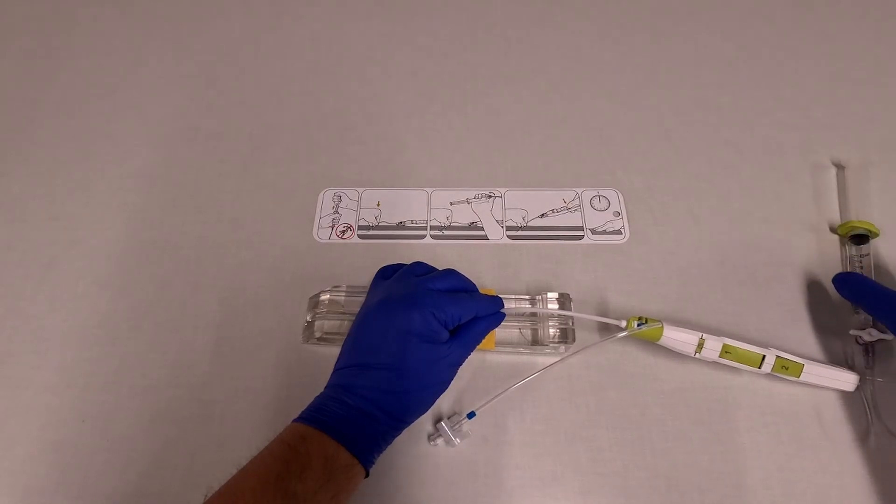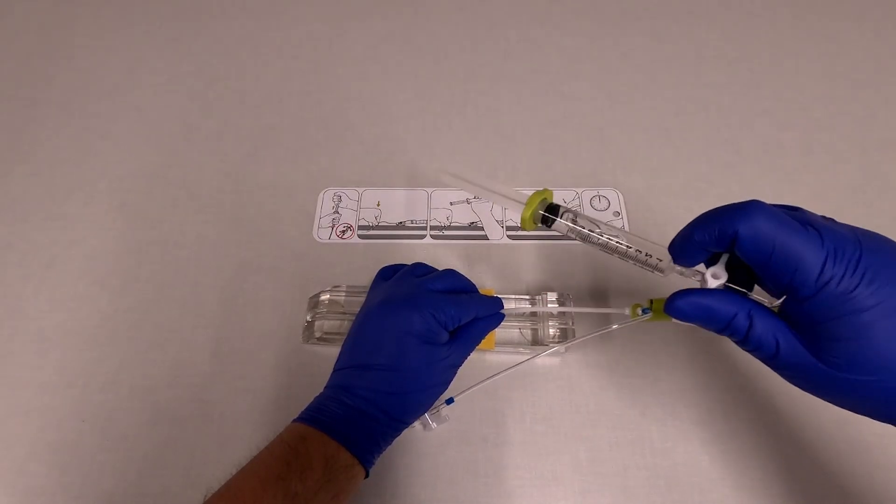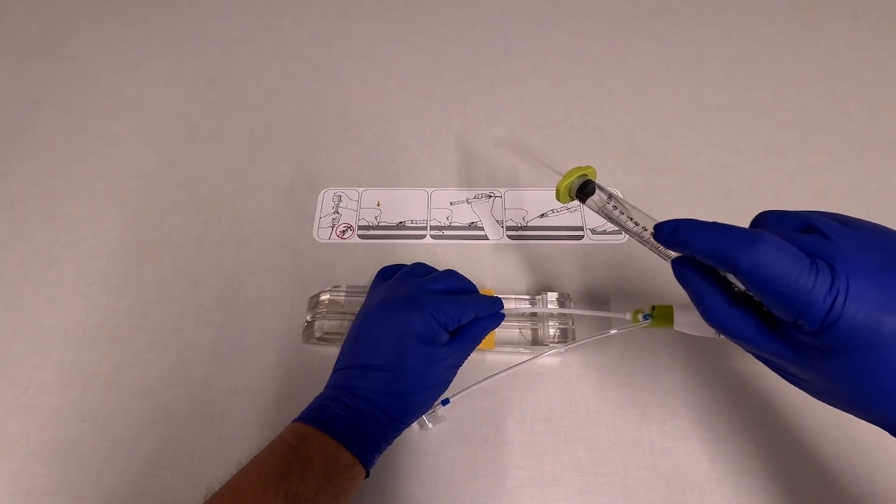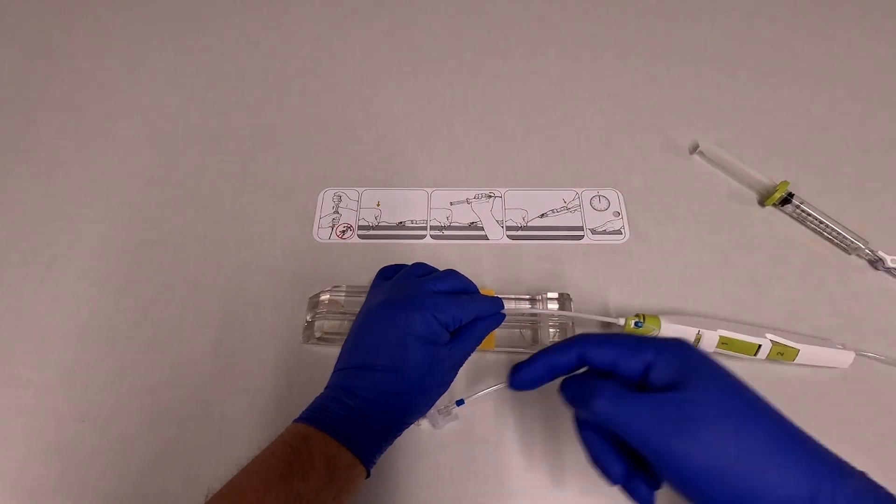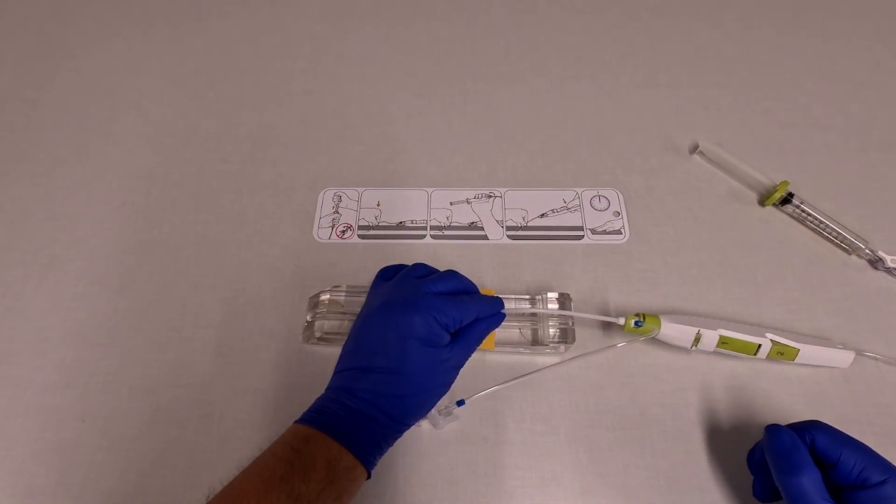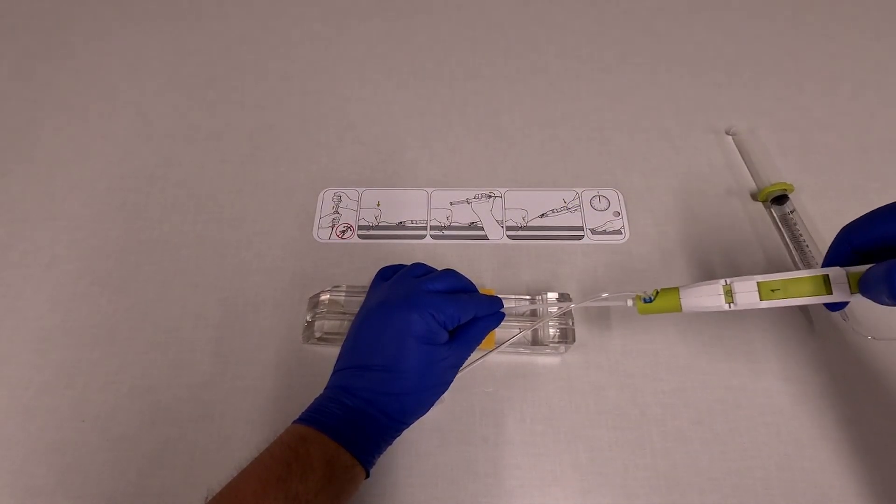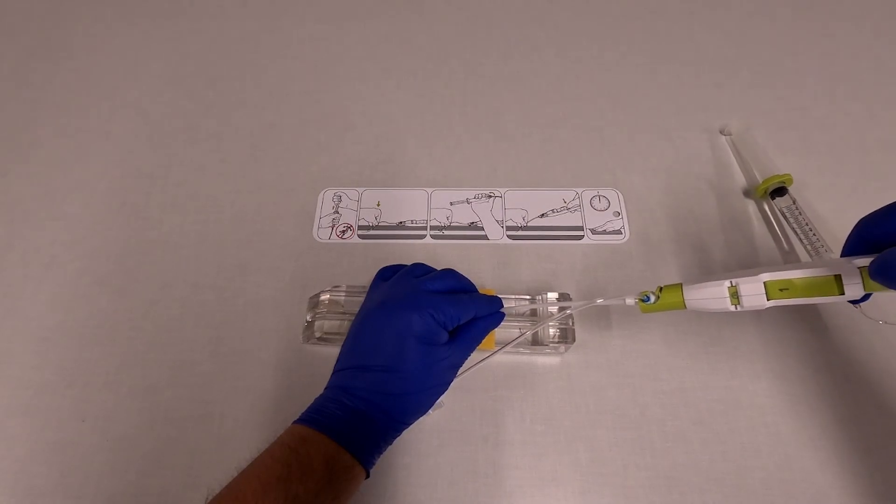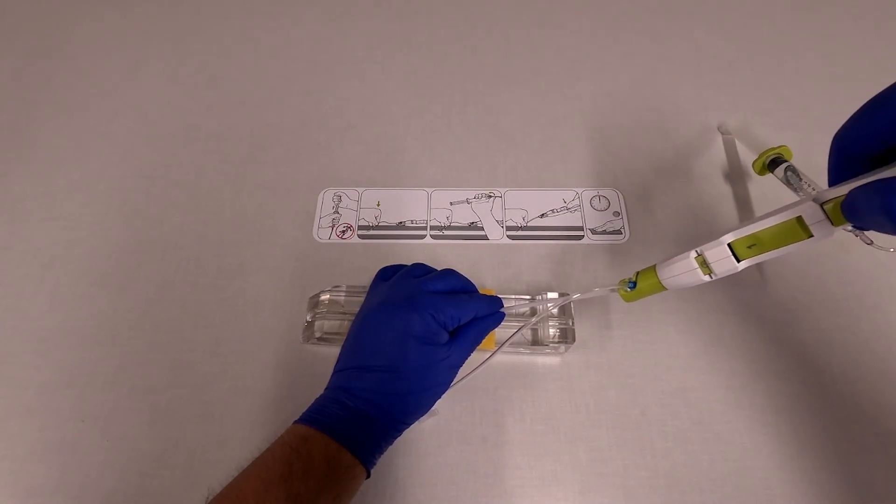This opens the vacuum and collapses the balloon. Then you pick up the device again and you're going to press the number two button. That collapses everything into the device and then you just pull it out and hold manual pressure.